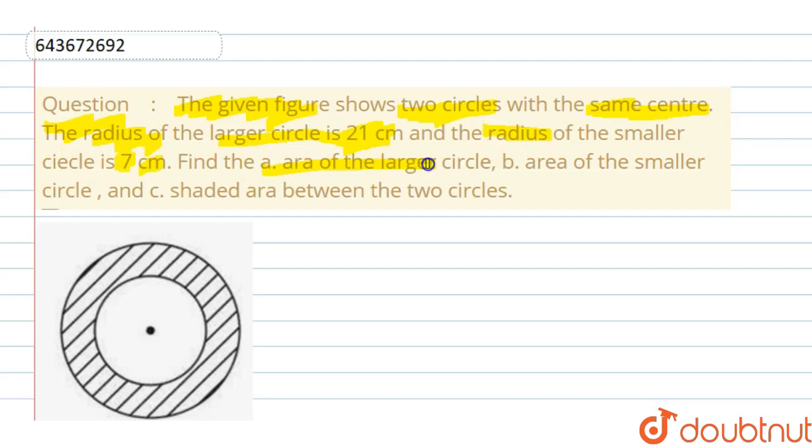Find the area of the larger circle, then the area of the smaller circle, then the shaded area between the two circles. That means area of the shaded region. This is what they are talking about in the third subpart.